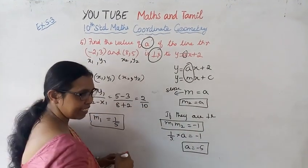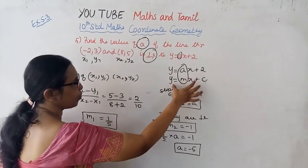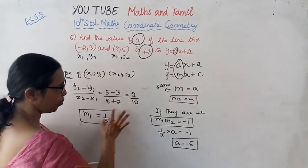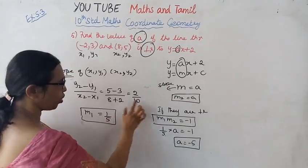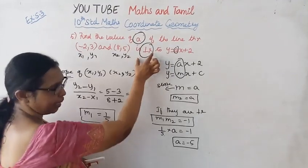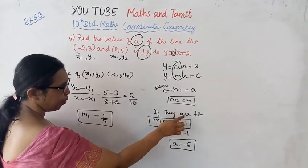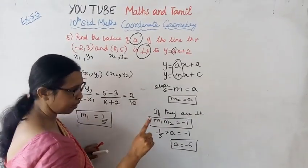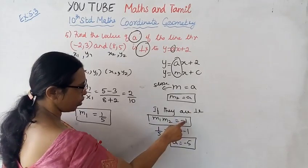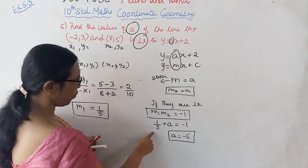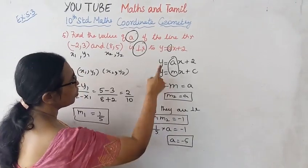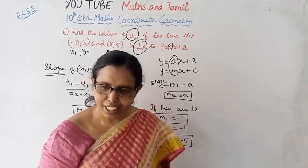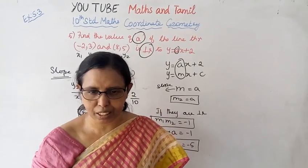Y equal to MX plus C, where M is the slope. If they are perpendicular, M1 times M2 equal to minus 1. M1 is 1 by 5, M2 is 1 by A. Therefore A equal to minus 1. This channel helps you to get 100 marks.